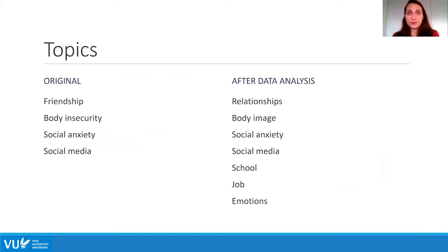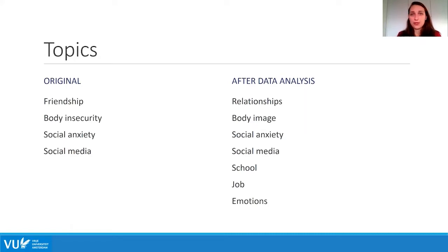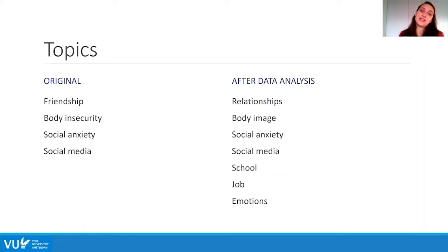We have different predefined topics we want to detect. Originally we had only four topics, but after looking at the data and talking to participants we found there are many more topics, and some were slightly changed. For example, 'friendship' was broadened to 'relationships' because people also wanted to talk about family or romantic relationships. The larger expanded set is what we used in our algorithm.